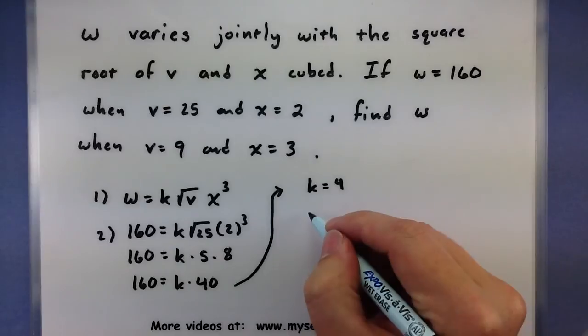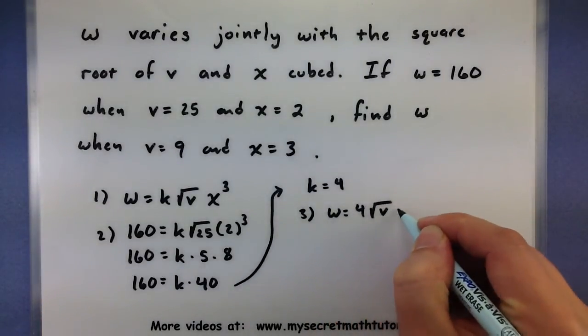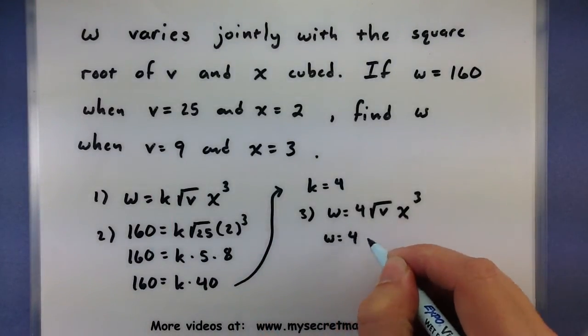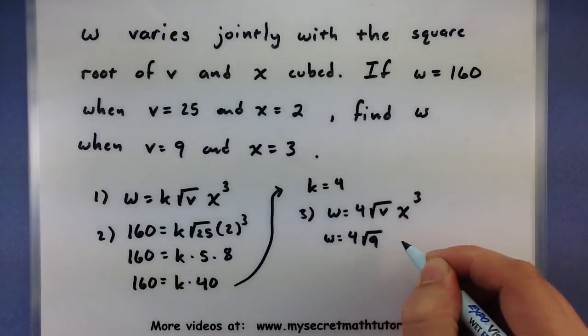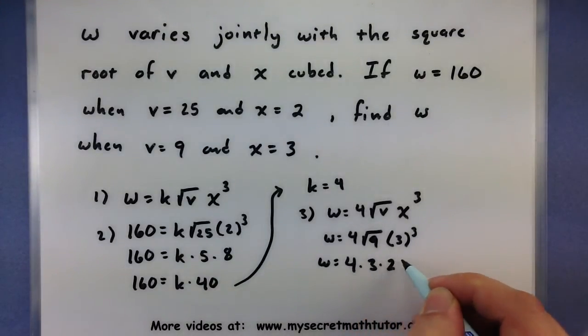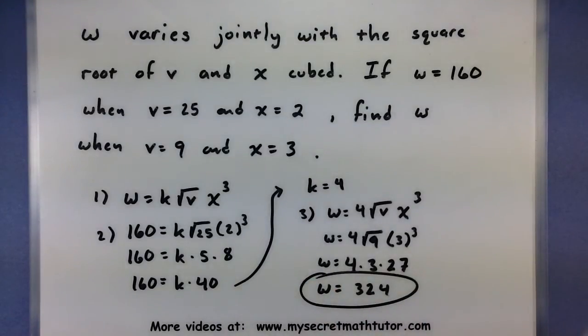Let's put that back in the original. So w equals 4 times the square root of v times x cubed. Now let's find w when v equals 9 and x equals 3. So w equals 9 and x equals 3. We'll have 4 times 3 times 27, which is kind of a big number, but w simply equals 324. And now that one's done.